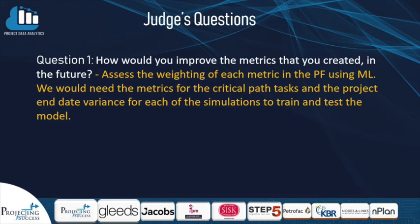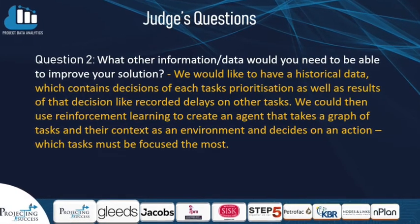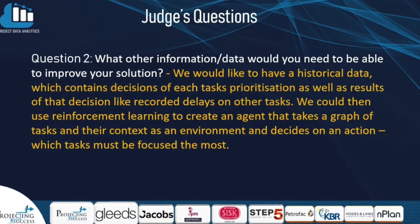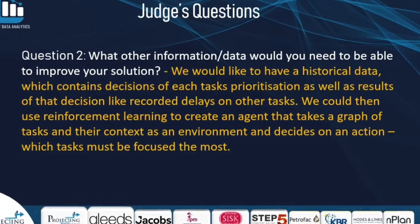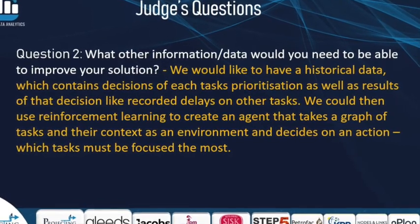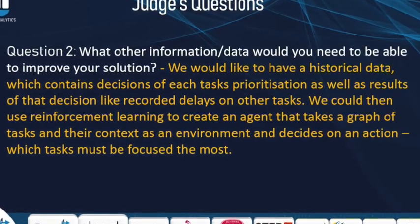To improve our metric in the future we would like to add weightings to each of the metrics using machine learning. However, to do that we would need the metrics for each of the critical parts and the project end date variants for each of the simulations processed by the model, so we can train and test our model. We would like to have historical data which contains decisions of each task prioritization as well as results of those decisions, like recorded delays on other tasks. We could then use reinforcement learning to create an agent that takes a graph of tasks and their context as an environment and decides on which task must be focused on the most.